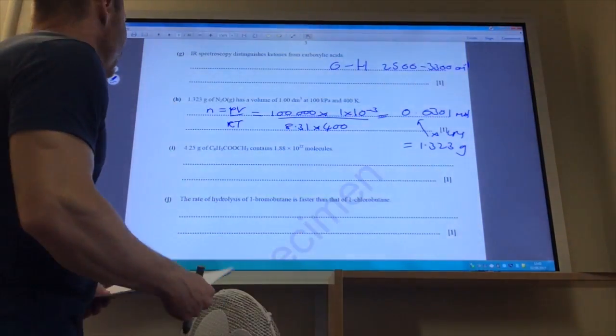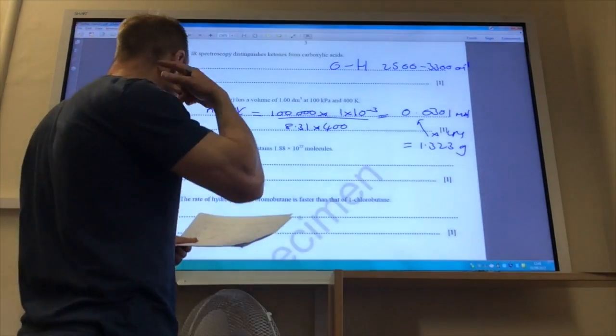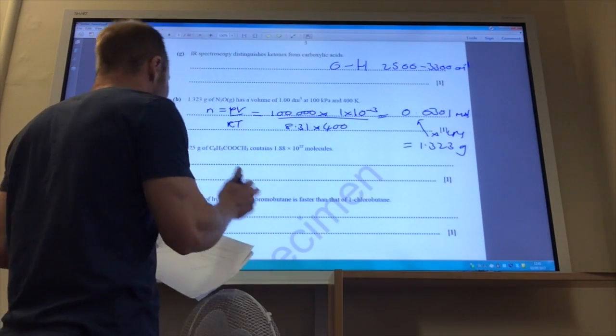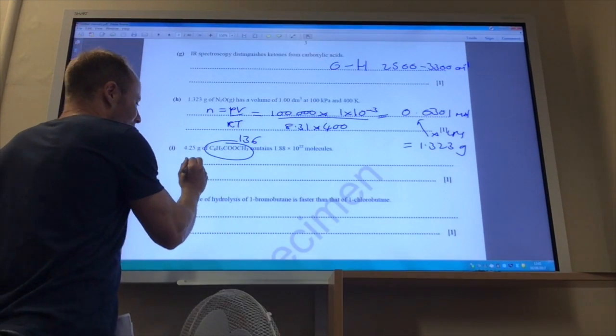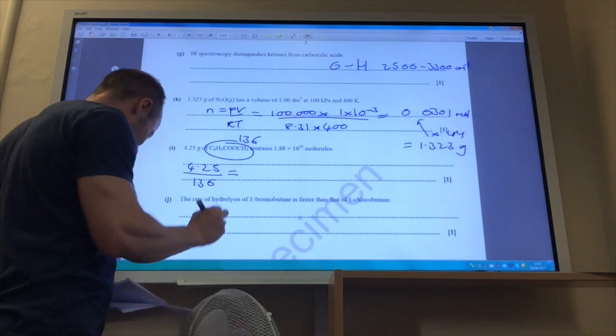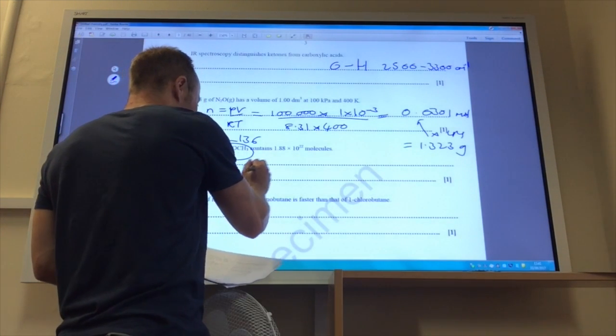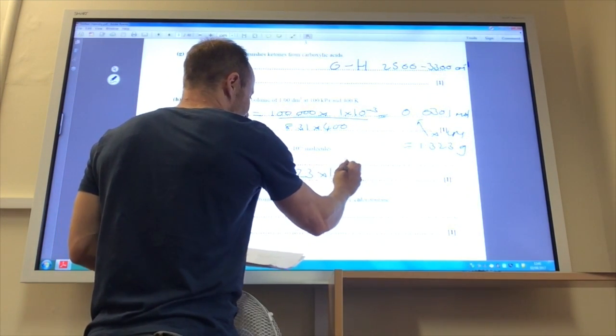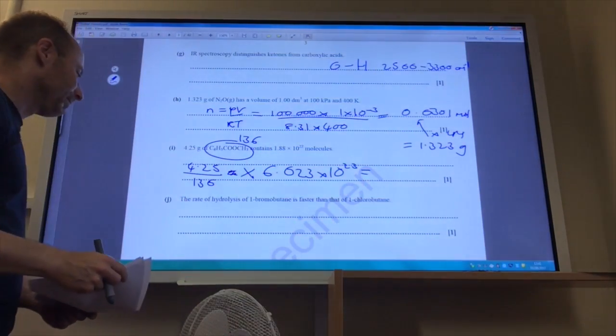4.25 grams of C6H3 has 1.88 times 10 to the 22 molecules. The MR of that is 136. So you find the number of moles by mass divided by molar mass. Then you times that by Avogadro's number, 6.02 times 10 to the 23 to give you that answer there.